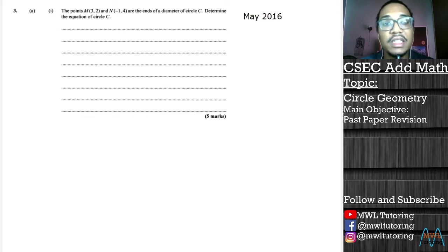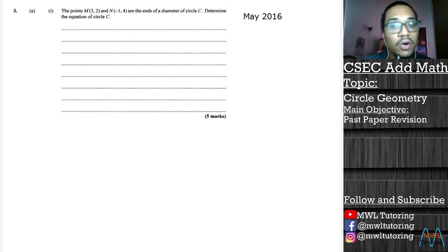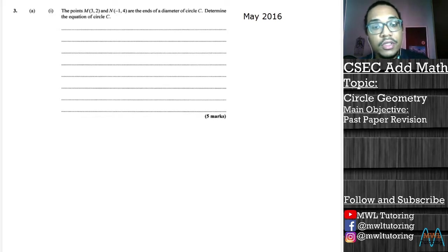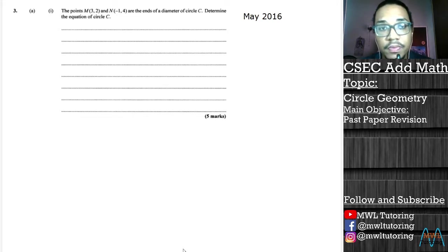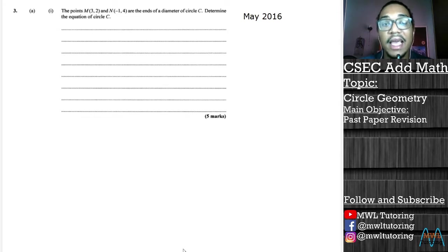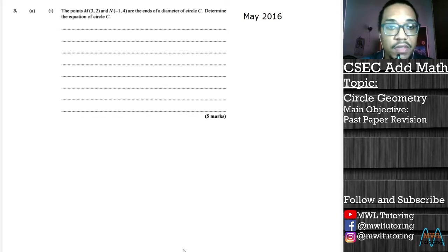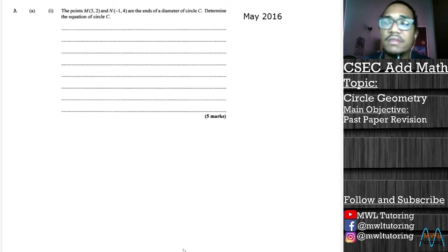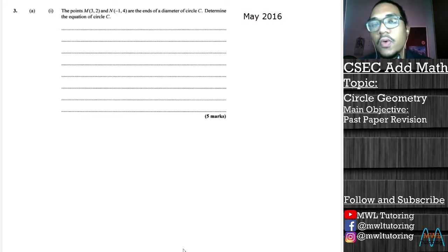Let's get a feel for it — see how they ask things, the different formulas we have to use, and all those nice things. The question starts off by saying: the points M(3, 2) and N(-1, 4) are the ends of a diameter of a circle C. Determine the equation of the circle C. So they just gave us two points and said find the equation of the circle.